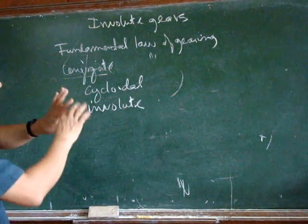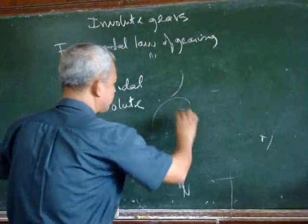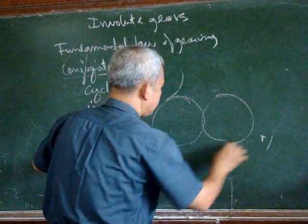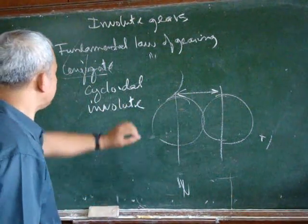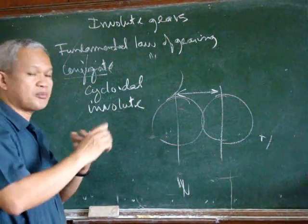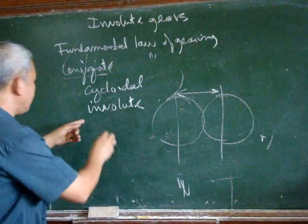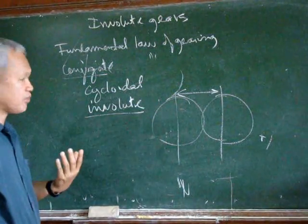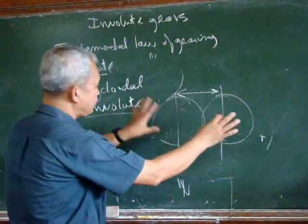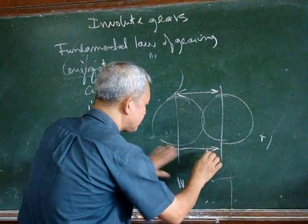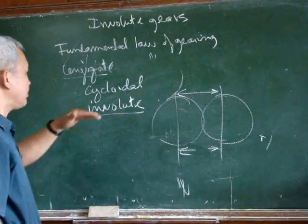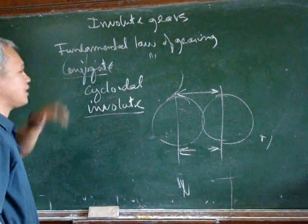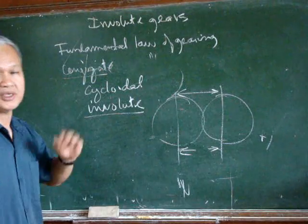When we have the design of cycloidal gears, there has to be a specific distance with which these cycloidal gears must operate. Involute gears, however, are different. If we have the design of involute gears, we can move them away from each other or we can move them closer to each other, and they'll still maintain their conjugate relationship, that fundamental law of gearing.